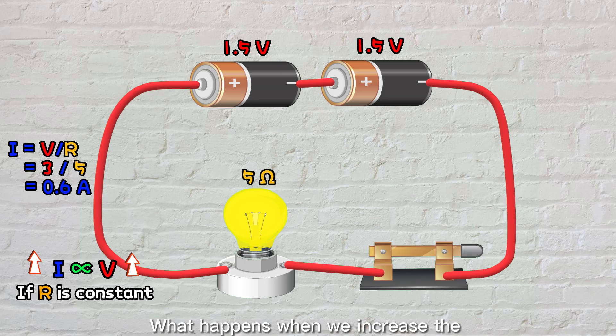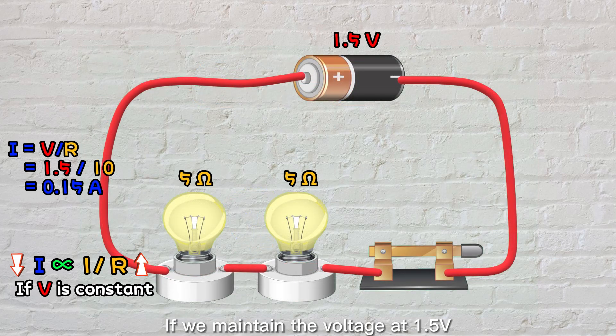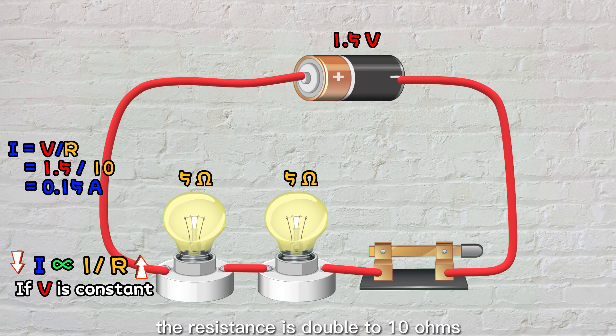What happens when we increase the resistance in our circuit? If we maintain the voltage at 1.5 volts and add one more bulb, the resistance is doubled to 10 ohms, and the current will be halved to 0.15 amps.